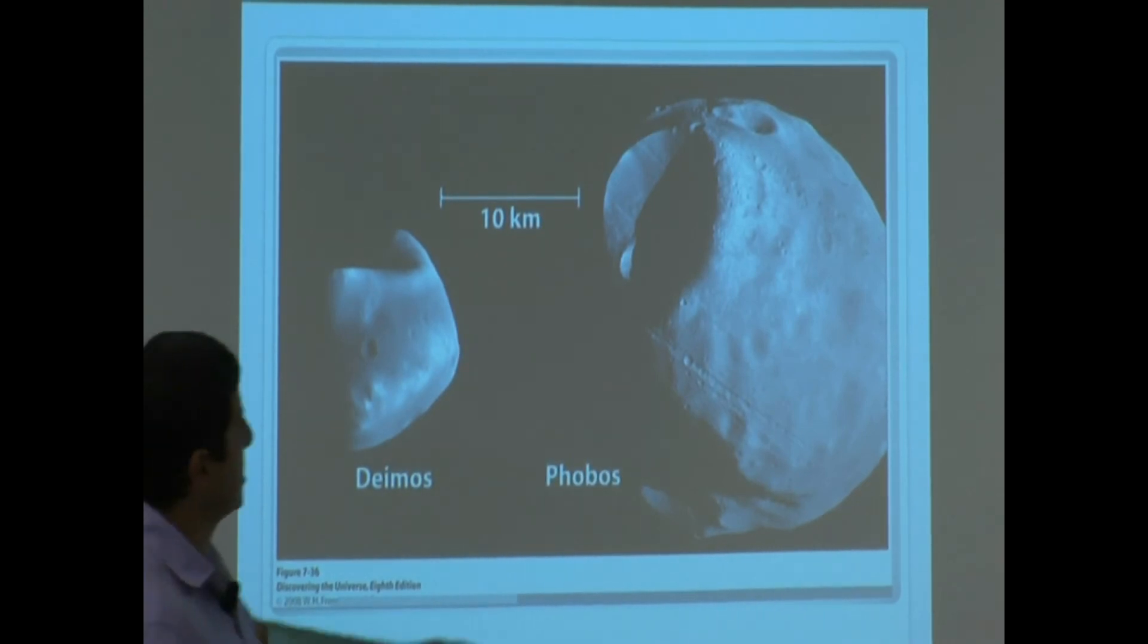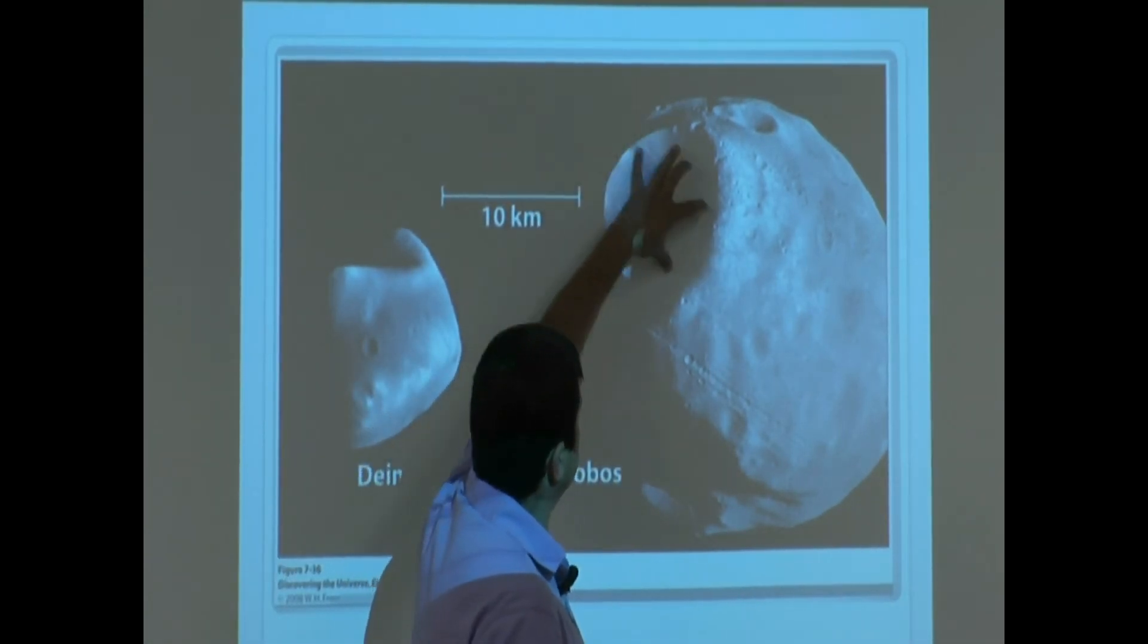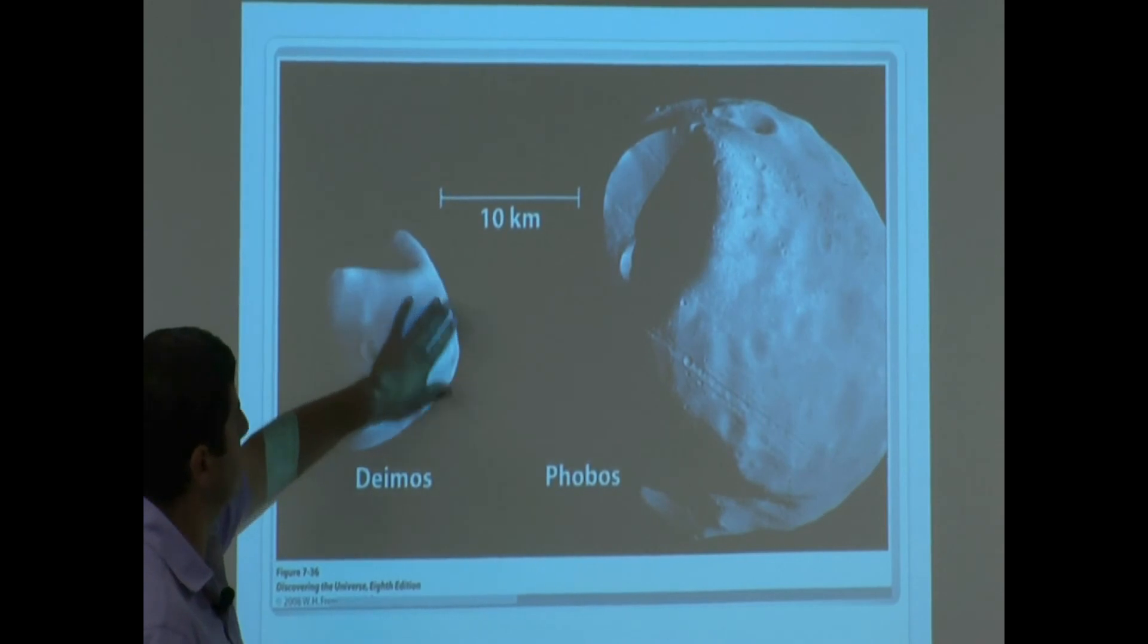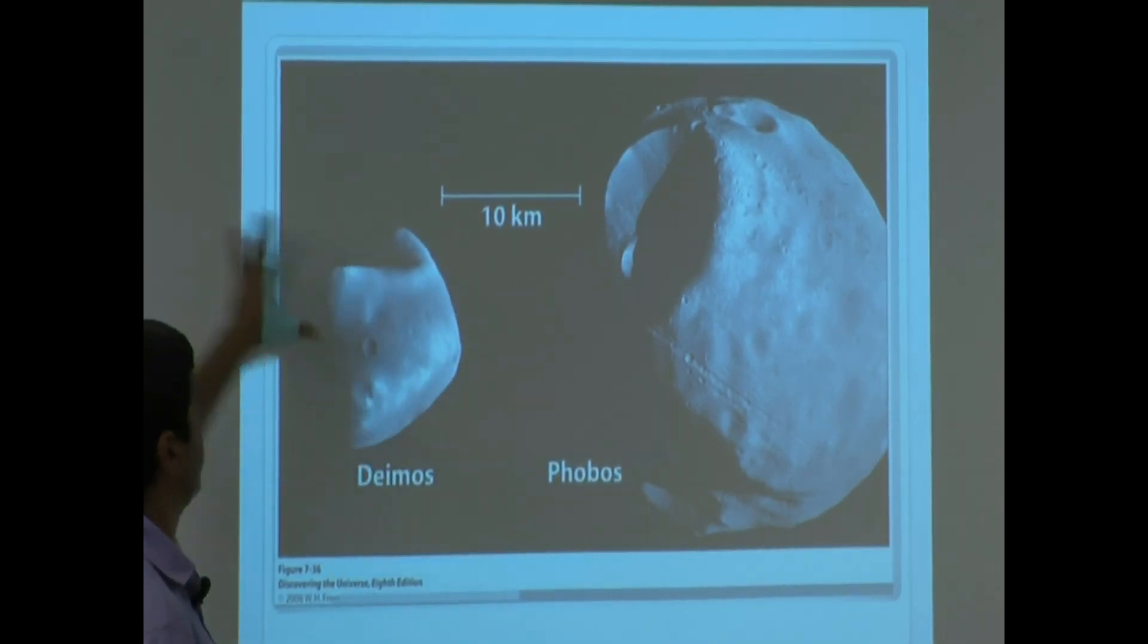This one is Phobos, right here. See the impact crater? And then this is Deimos. Deimos is a lot more smooth looking, filled with a lot of dust. Smooth. And then it's farther away.